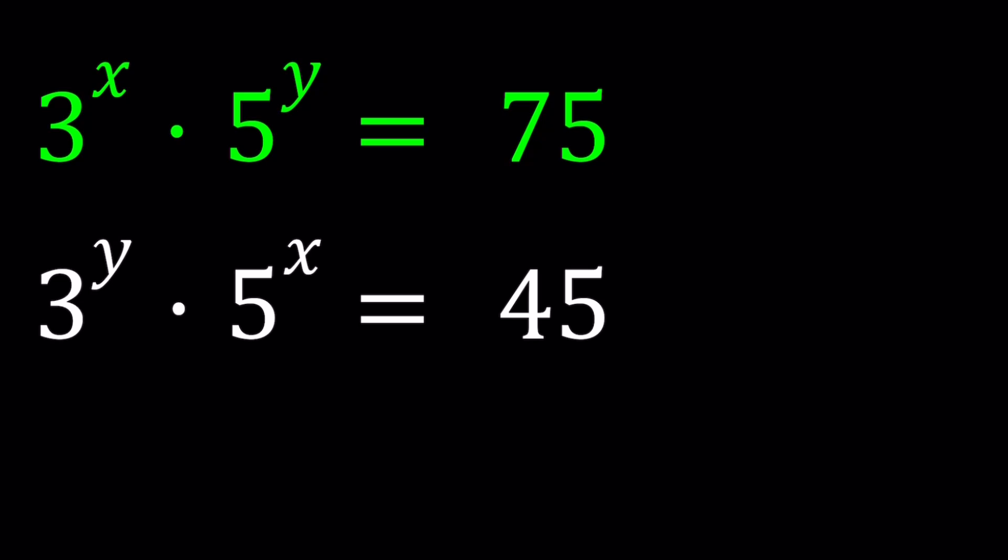3 to the power x times 5 to the power y equals 75, and 3 to the power y times 5 to the power x equals 45. We're going to be solving for x and y values. I'll be presenting two methods and let's start with the first one.